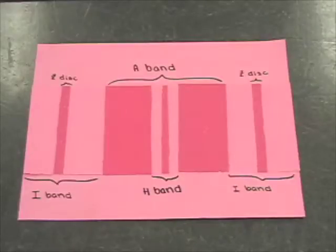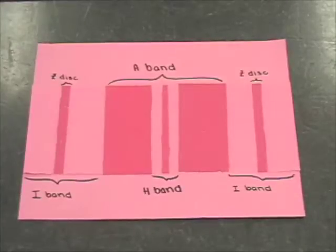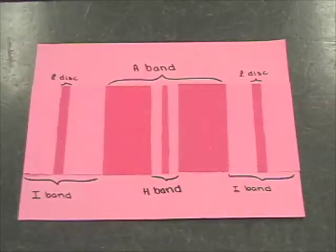The H-zone is a narrow region in the center of each A-band that contains thick filaments but has no thin filaments. And the M-line is a region in the center of the H-zone that contains proteins that hold the thick filaments together at the center of the sarcomere.